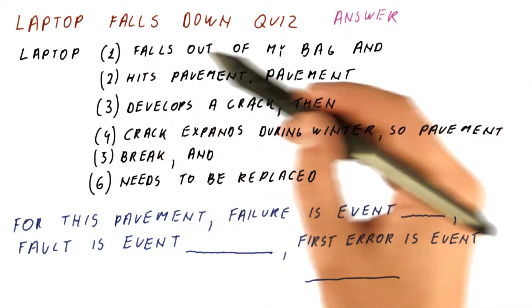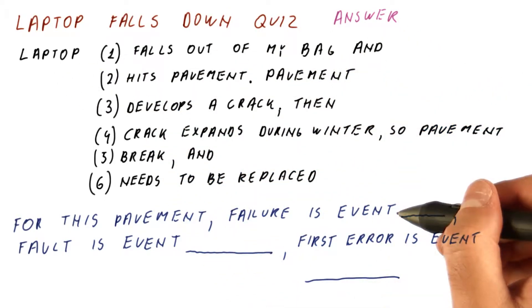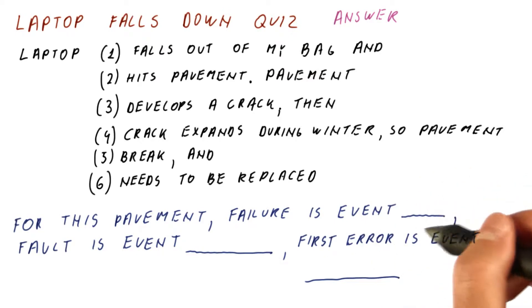So let's discuss the answer to our laptop falls down quiz. For the pavement, the failure is whatever causes the pavement to no longer perform its function properly.